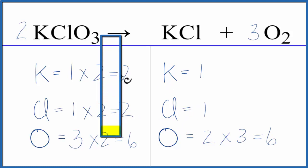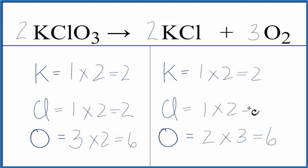And then I need two chlorines and two potassiums, a coefficient of two in front of the KCl. One times two, that gives me two, and one chlorine times the two, that gives me two chlorines.